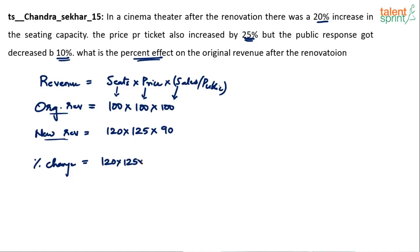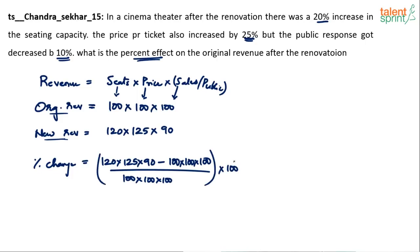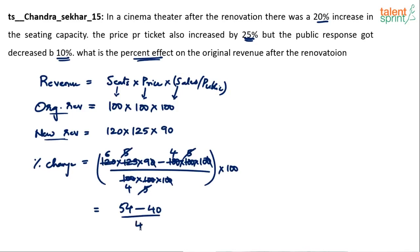So it's like 120 × 125 × 90 minus 100 × 100 × 100, divided by the initial, into 100. Taking 25 common, then 20 common, then 10 common — simplifying — we get 54 minus 40 upon 40 into 100, which gives 14 by 40 into 100.